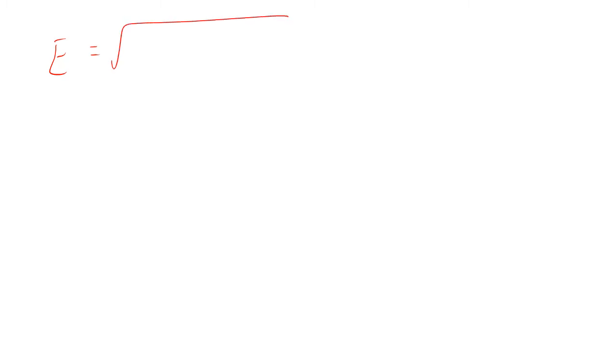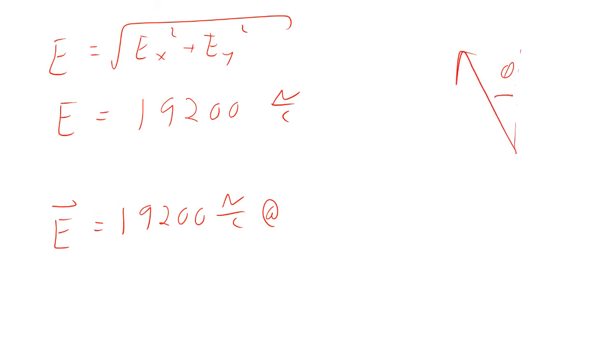What about E? E is going to be the square root of EX squared plus EY squared. We have those components there. Plug it in. That's 19,200 newtons per coulomb. So the final vector, direction and magnitude, 19,000 newtons per coulomb at an angle of, now we said it's at an angle like that. We said this phi to vertical was 20.3 degrees. So that should be 20.3 degrees.